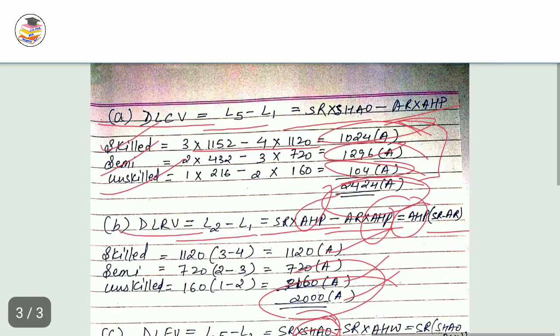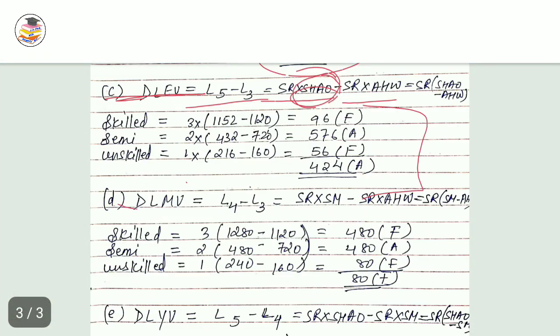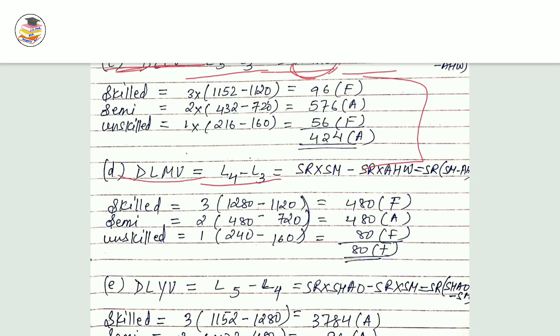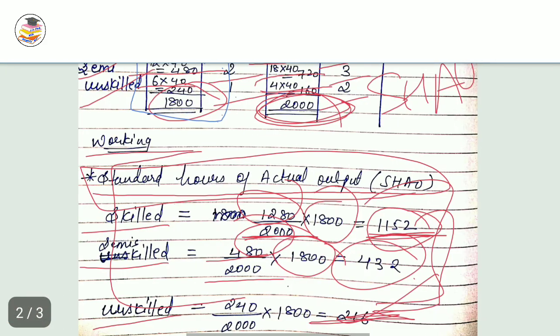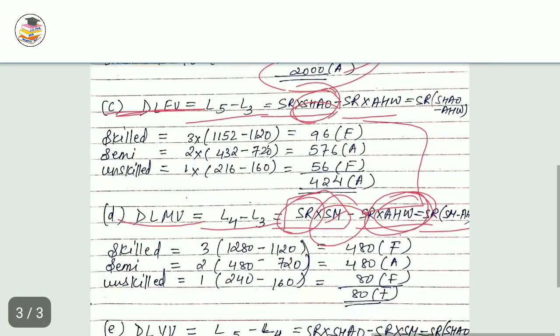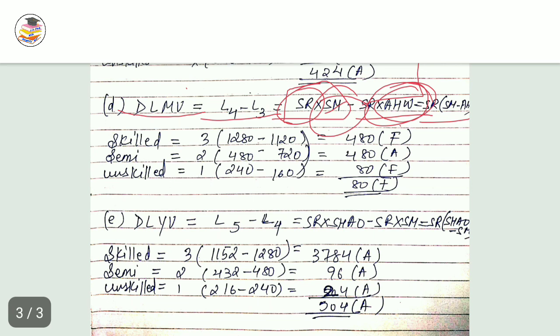Direct labor mix variance: L4 minus L3. SR into SM (standard mix) minus SR into AHW (actual work). SR is common in the formula. You have to know actual work from here, and standard mix you have to take from these standard values. Put the values here and get the answer.